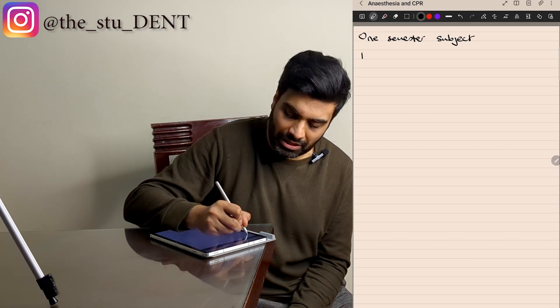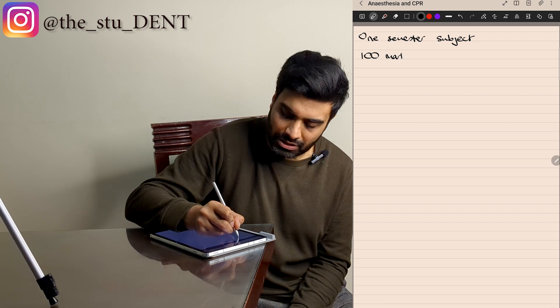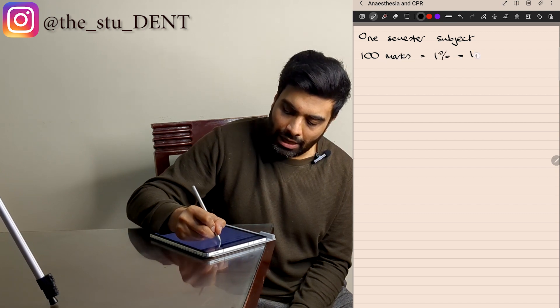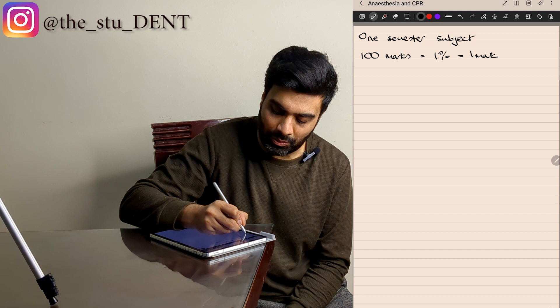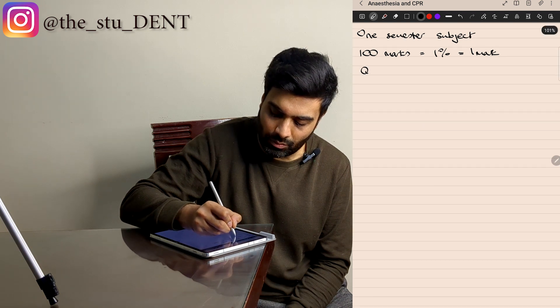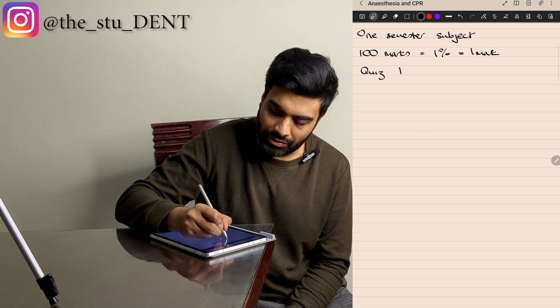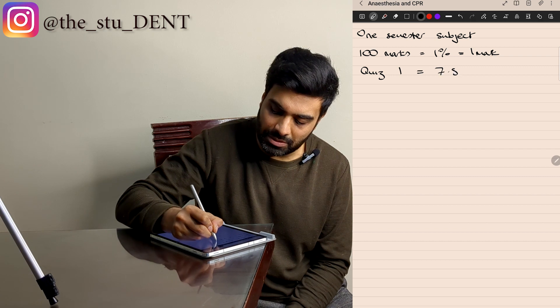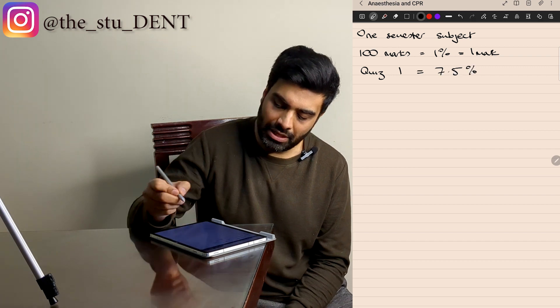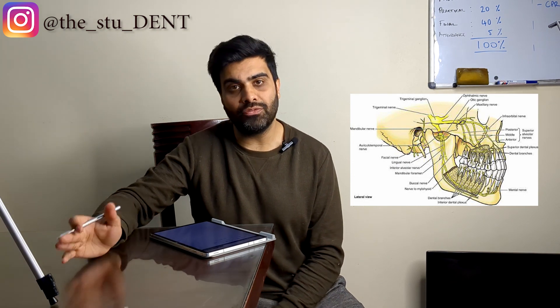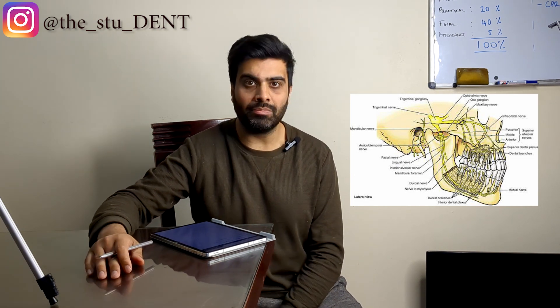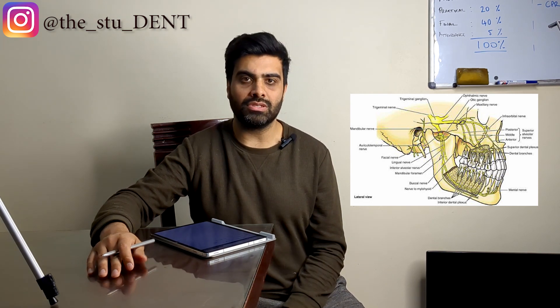Each subject is made up of 100 marks, so one mark is equal to 1%. The first exam we have is Quiz 1, which is worth 7.5 marks or 7.5%. This basically covers the innervation of the head and neck — looking at the different teeth, maxillary and mandibular, and what nerves are innervating each one. So if we were to give anesthesia to a certain nerve, what would it do? What are the effects?